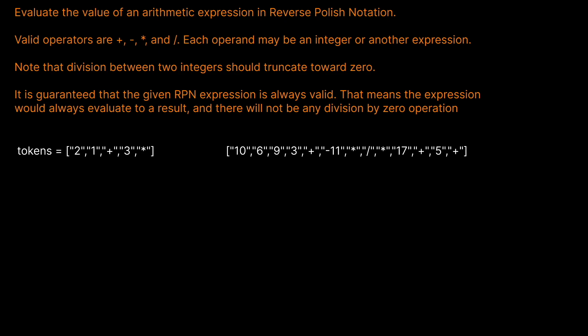Evaluate the value of an arithmetic expression in reverse Polish notation. Valid operators are plus, minus, multiplication, and divide. Each operand may be an integer or another expression. Note that division between two integers should truncate towards zero, and it is guaranteed that the expression is always valid — it will always evaluate to a result and there will be no division by zero operations.